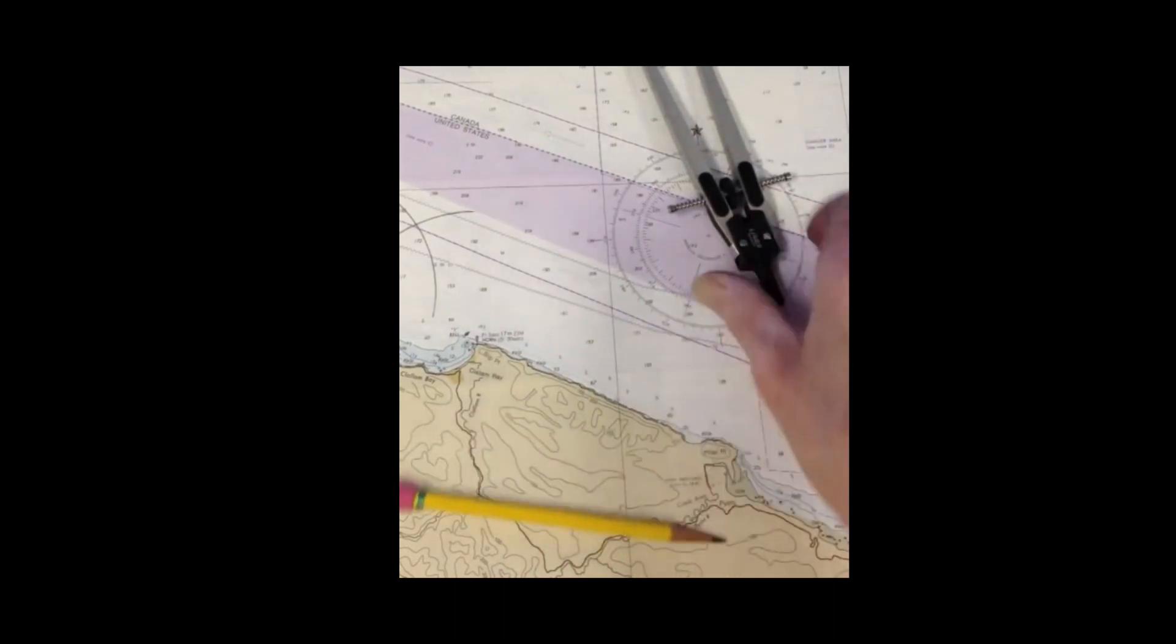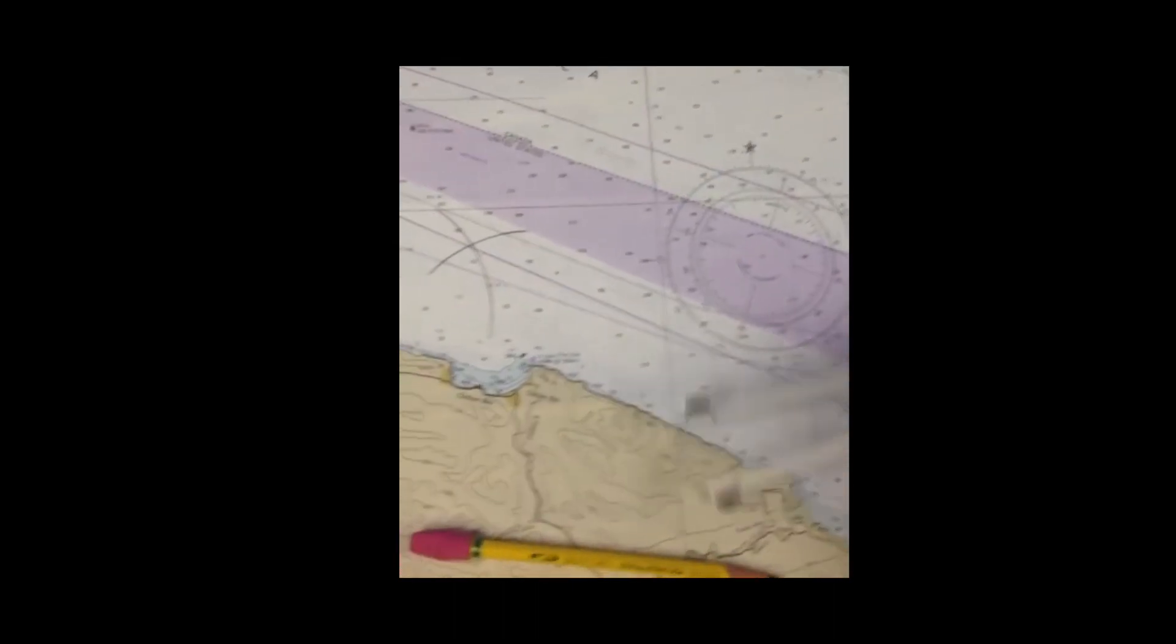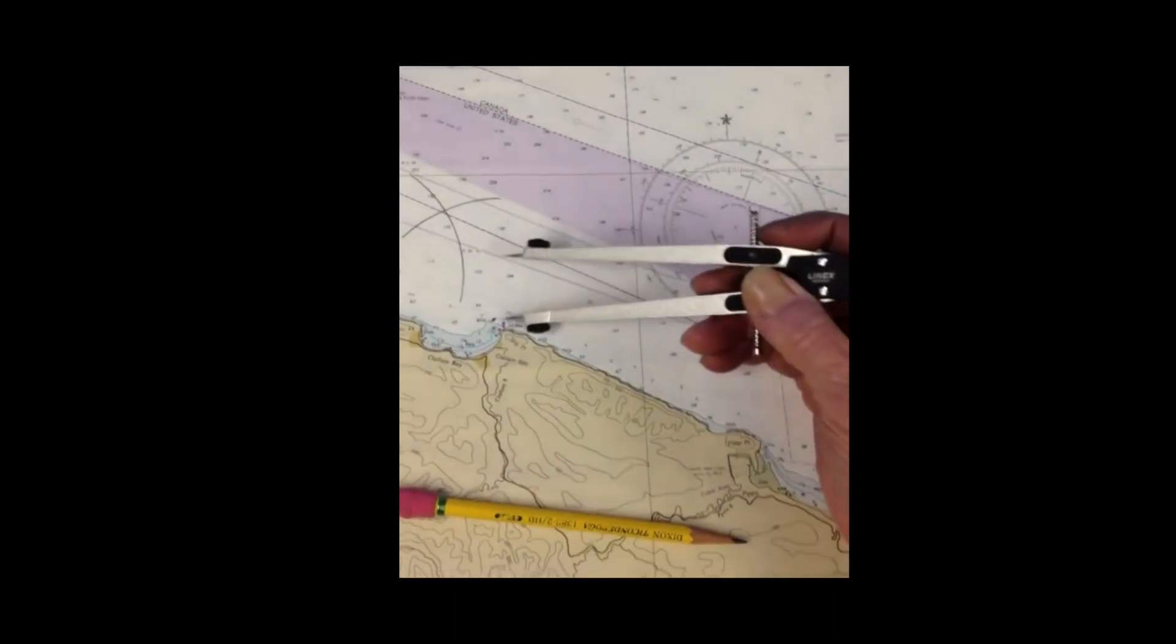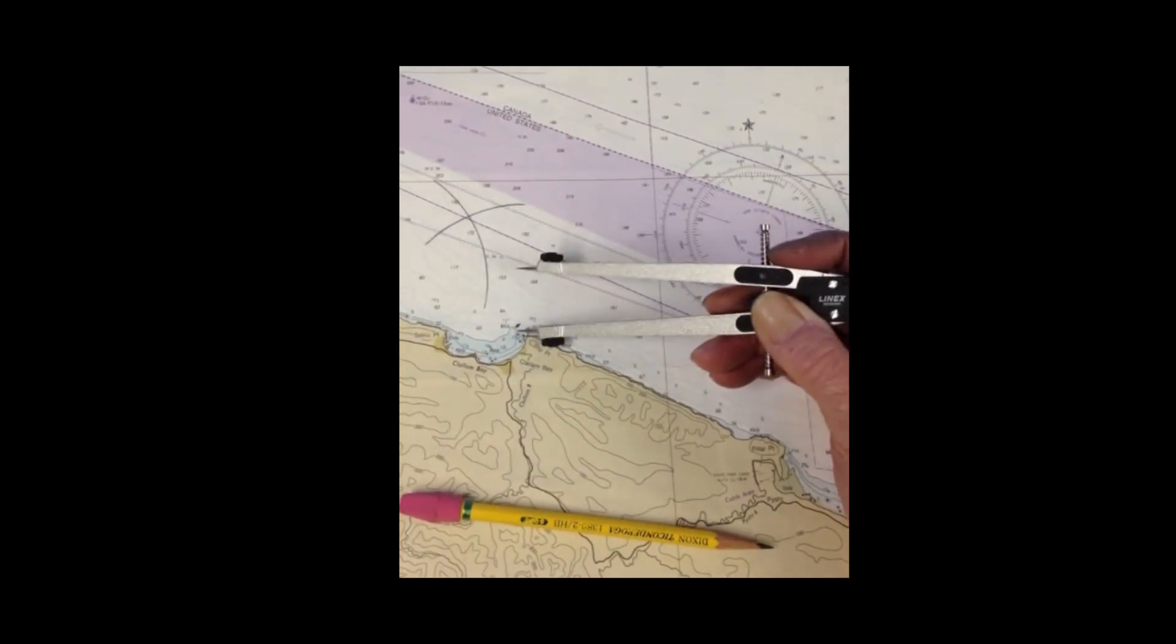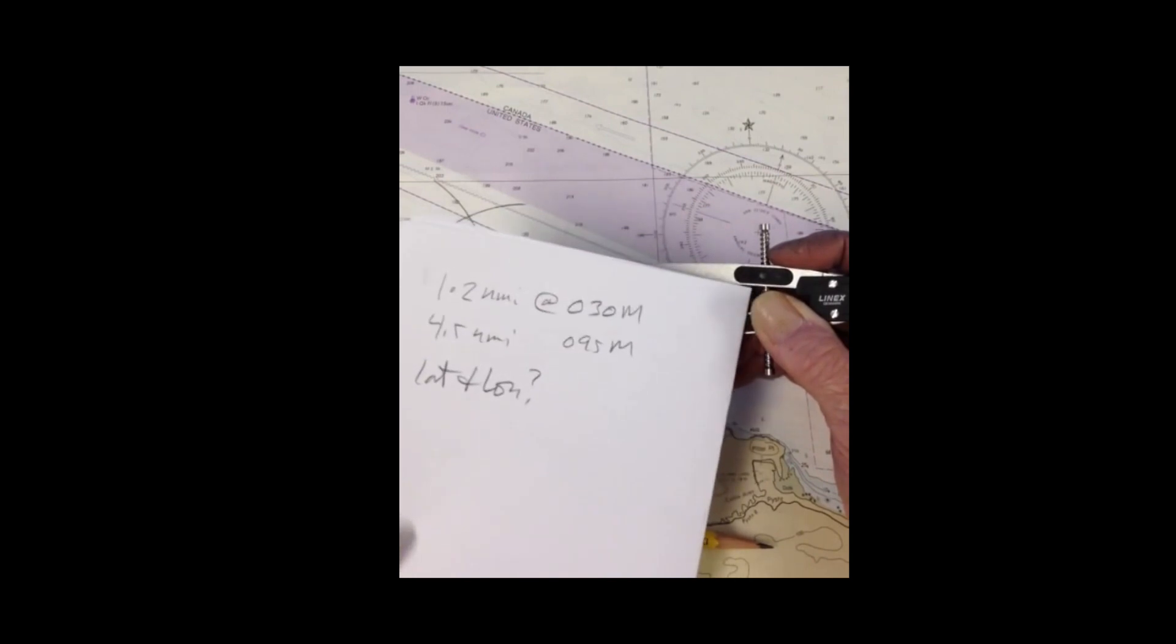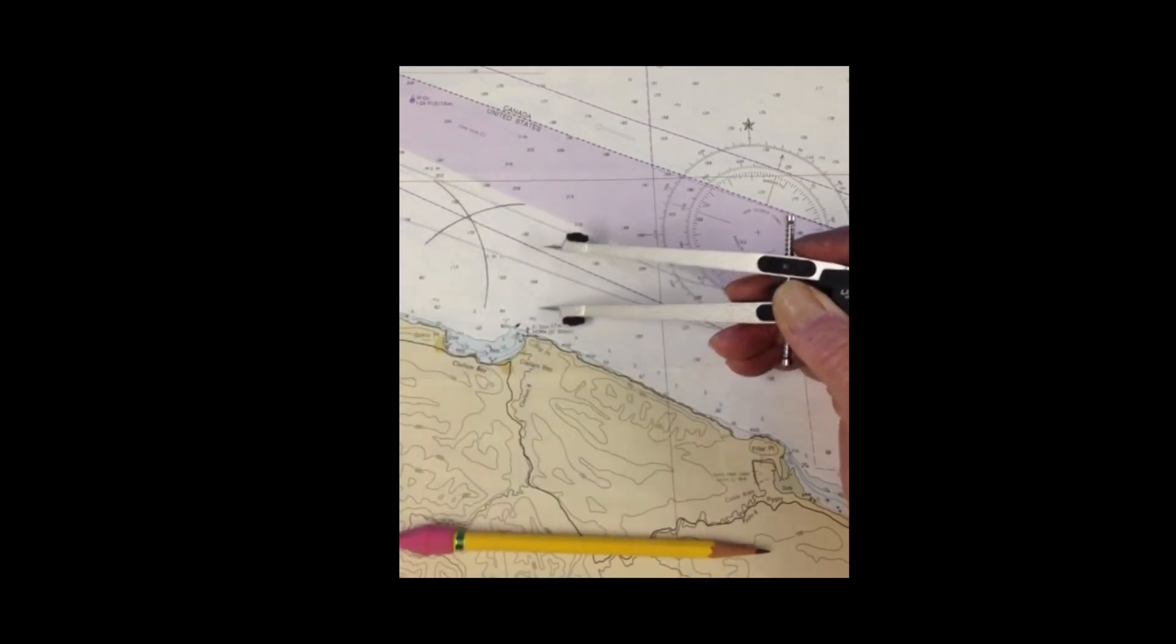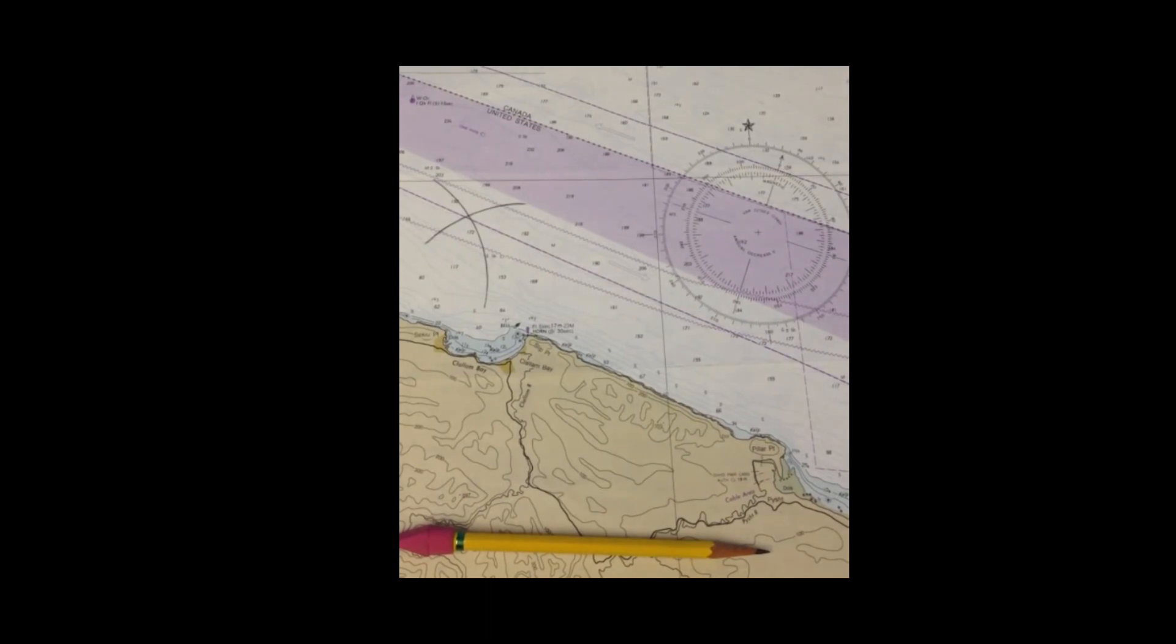We'll start at this point here, at this buoy right here. We're going to plot 1.2 nautical miles in direction 030 magnetic, then turn to 095 magnetic and go 4.5 nautical miles, then ask for the latitude and longitude after doing that.